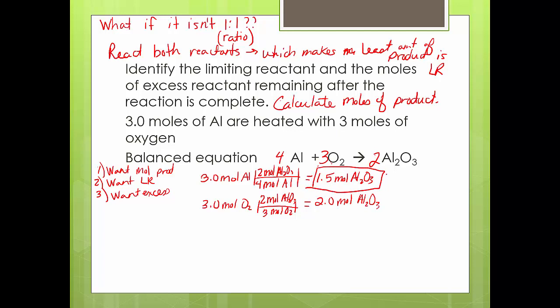If it asked for grams I'd do the next step using molar mass, but this just asked for moles, so I'm done. That's one answer. Then it asks: what is the limiting reactant? This is not a reactant — this is a product — do not just write that, you will get it wrong. You have a 50-50 chance here: which one made the least amount? Aluminum is the limiting reactant because you ran out of aluminum. It's either aluminum or oxygen as your choice.